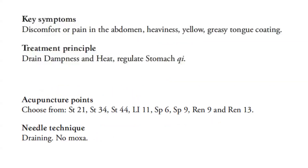Key symptoms: discomfort or pain in the abdomen, heaviness, and yellow greasy tongue coating. Treatment principle: drain dampness and heat, regulate stomach chi. Acupuncture points: choose from stomach-21, stomach-34, stomach-44, LI-11, spleen-6, spleen-9, REN-9, and REN-13. Needle technique: draining, no moxa.